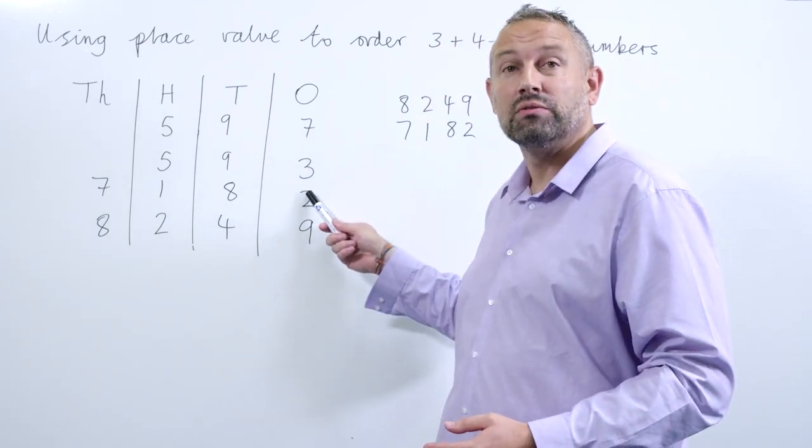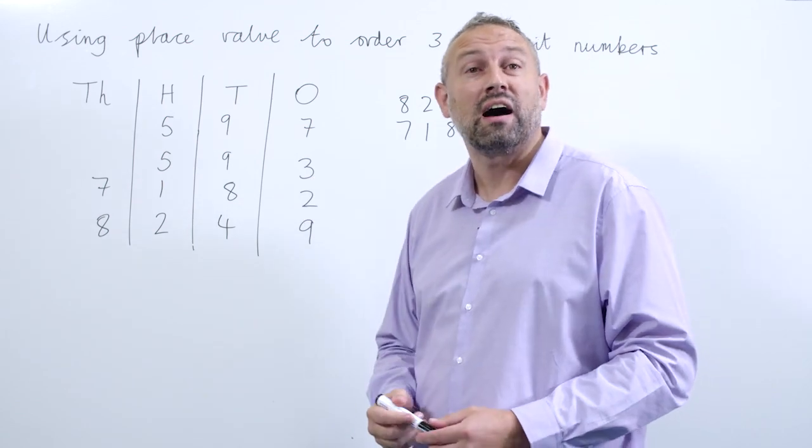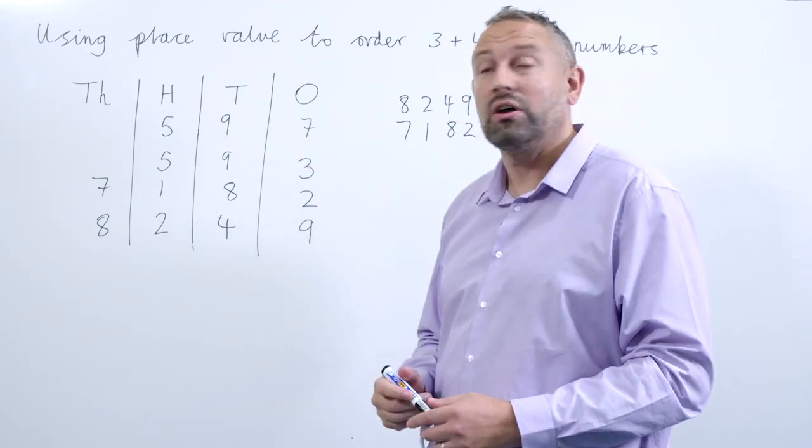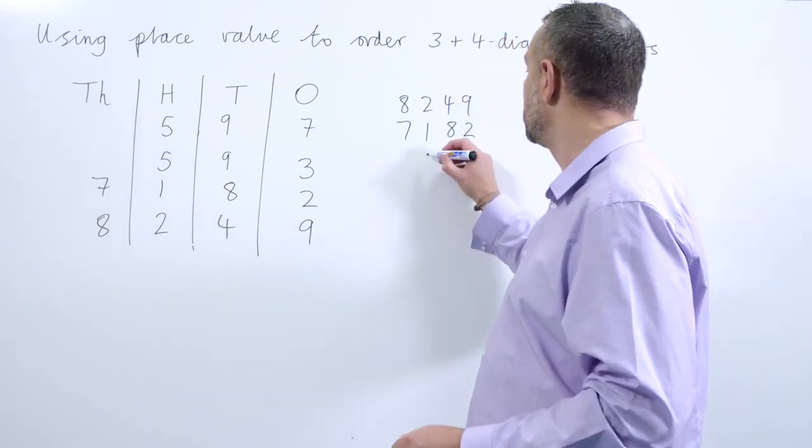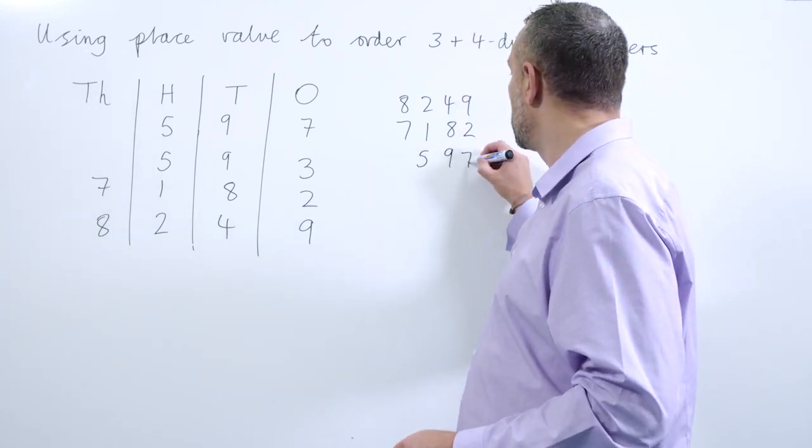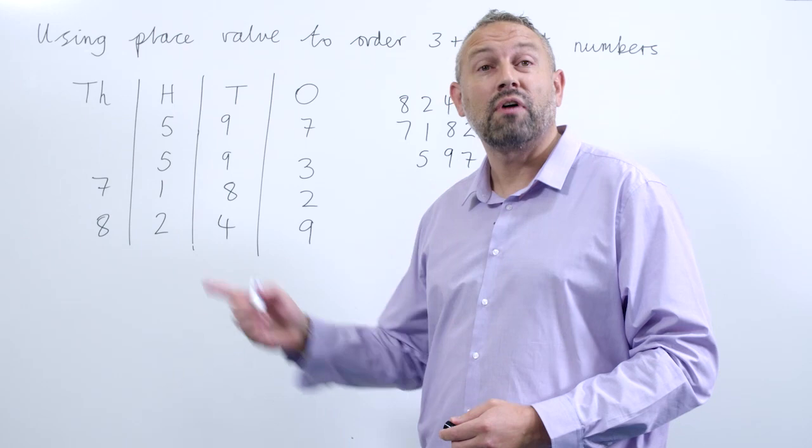And we have seven ones and three ones, and seven ones has a higher value. So the next number is 597, and then finally 593.